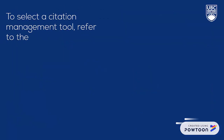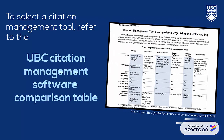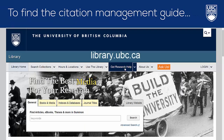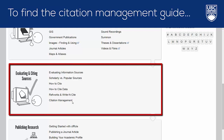To select a citation management tool for yourself, refer to the UBC citation management software comparison table and identify the tool that is best suited to your needs. Then download and install that citation manager so it's ready to use when you start your research. You can find the comparison table on the UBC library website by choosing Get Research Help, then Evaluating and Citing Sources, and then Citation Management.